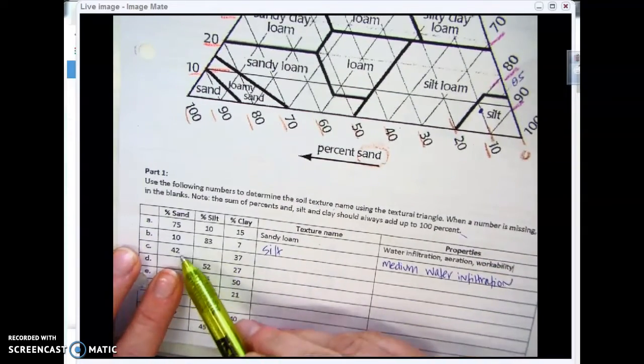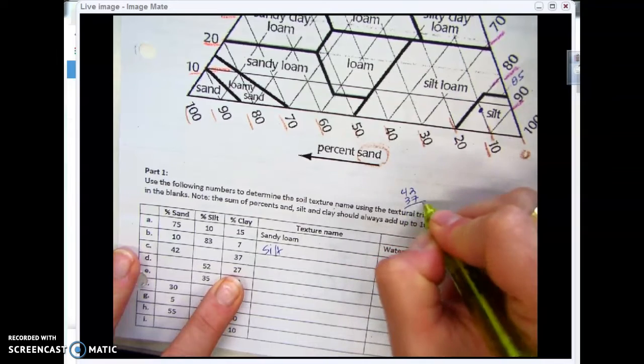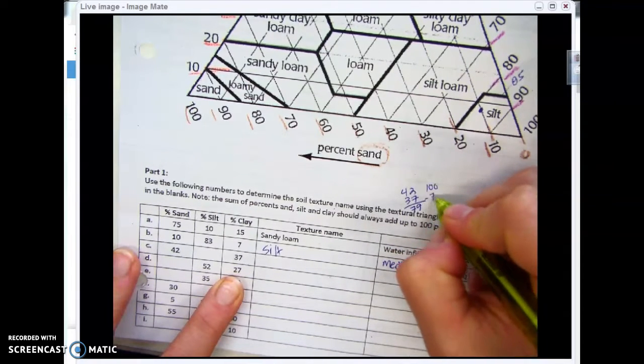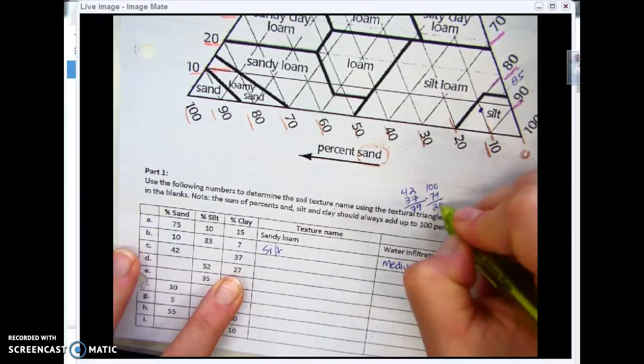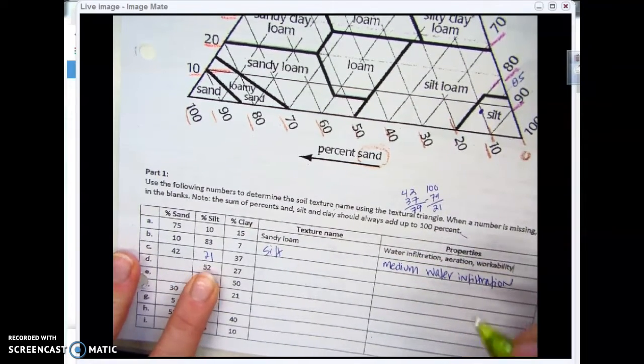For this one, I have 42% sand and 37% clay. I'm going to add those together. That gets me 79. Of course, because we're talking about percents, we need to take that away from 100. So that gives me 21% silt. I can choose any one of these.